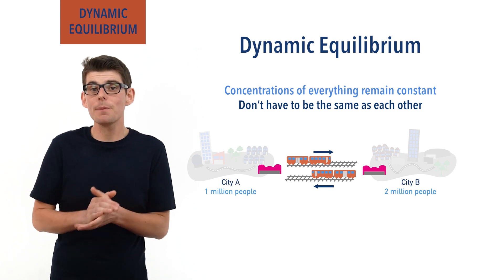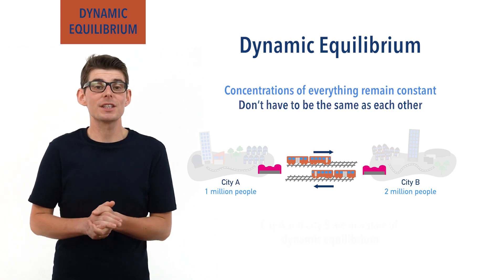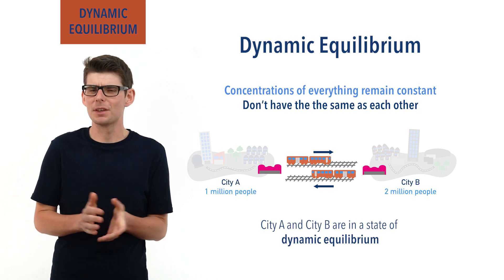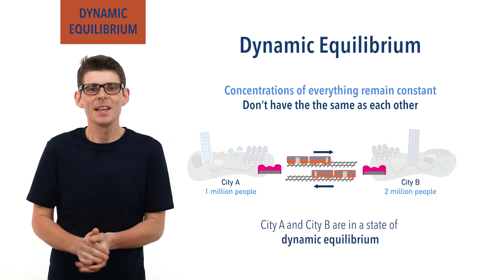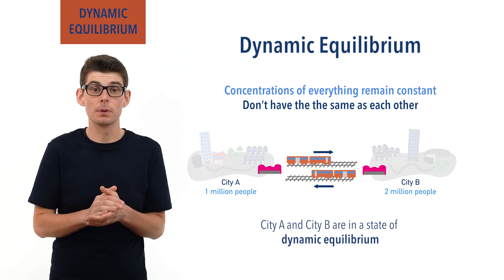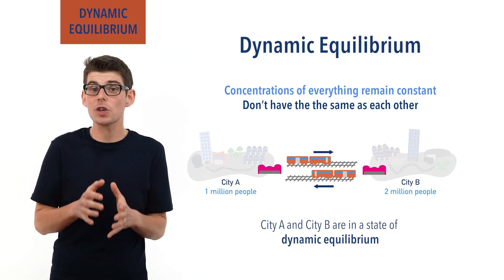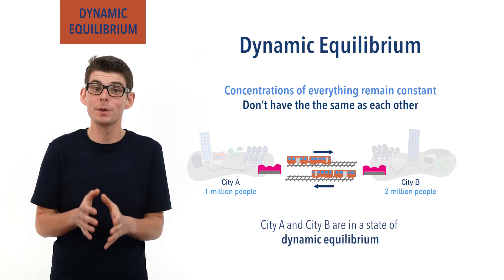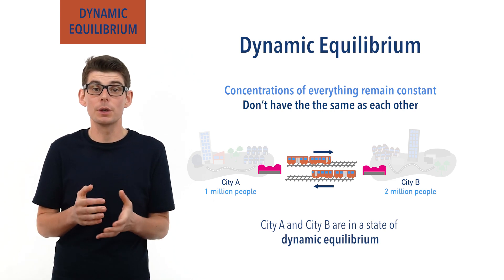We could describe these two cities as in a state of dynamic equilibrium, as weird as that may seem. The point here is that the two cities contain different numbers of people, but as the rate of exchange of people between the two is the same, the numbers don't change.